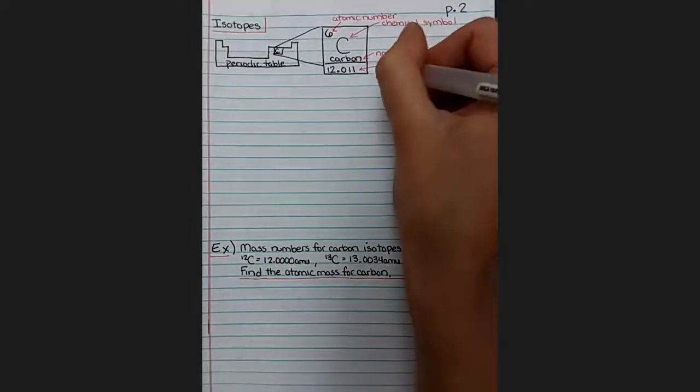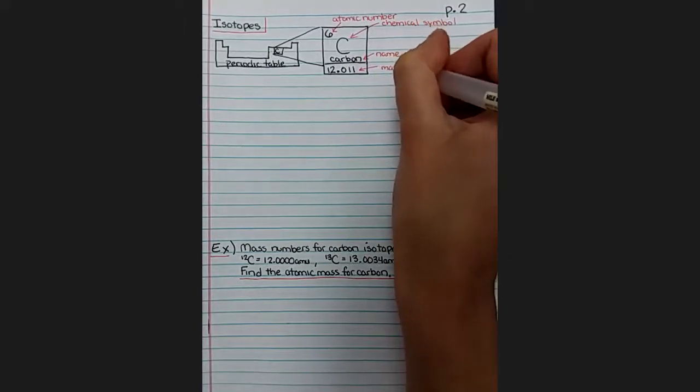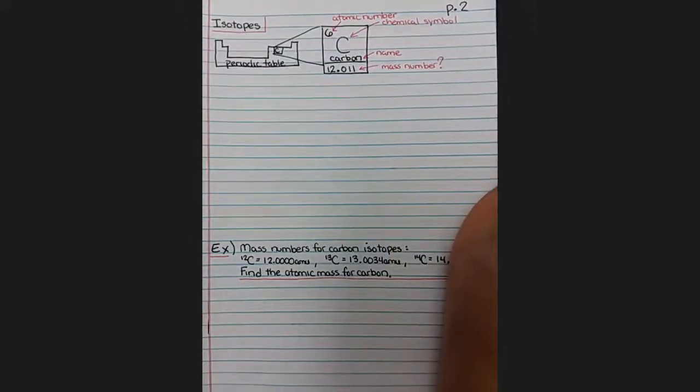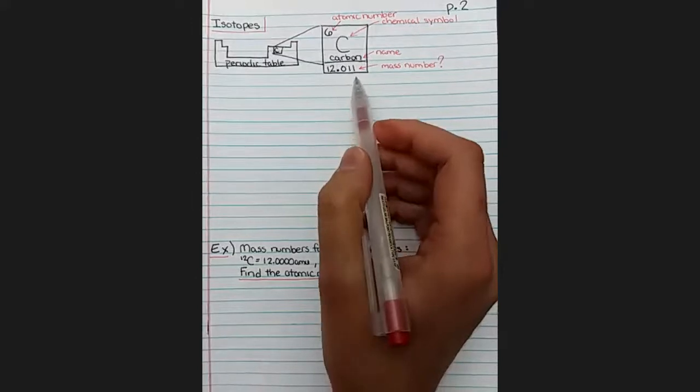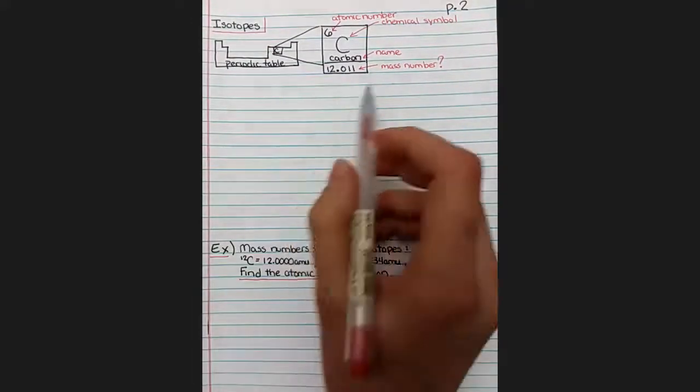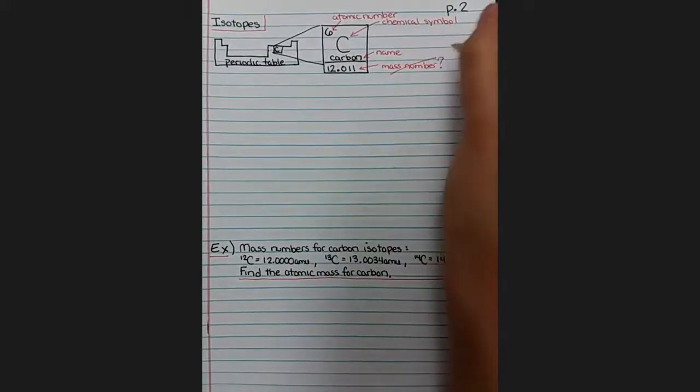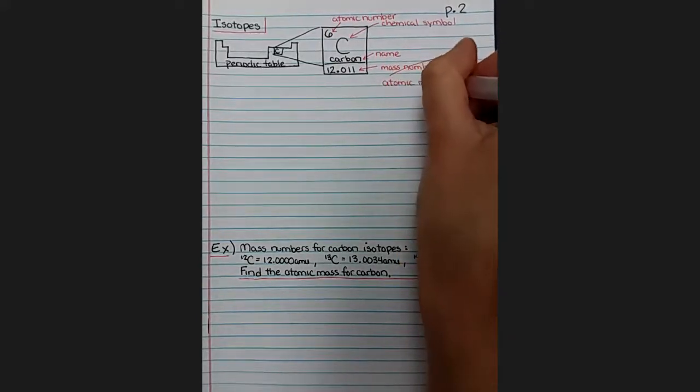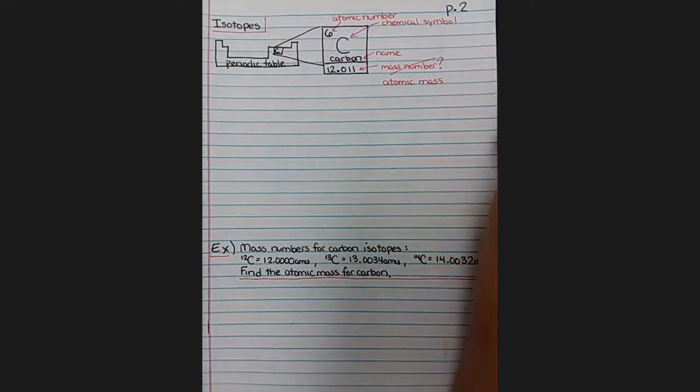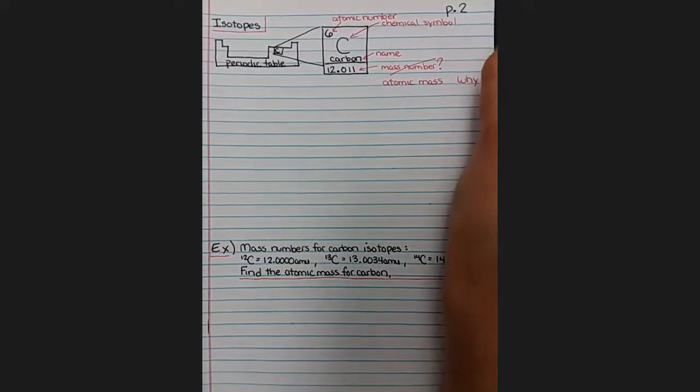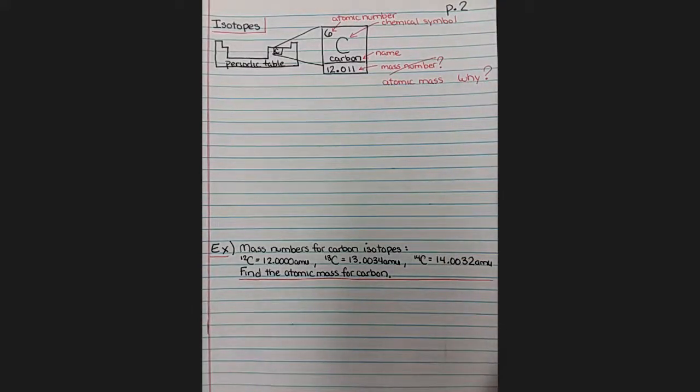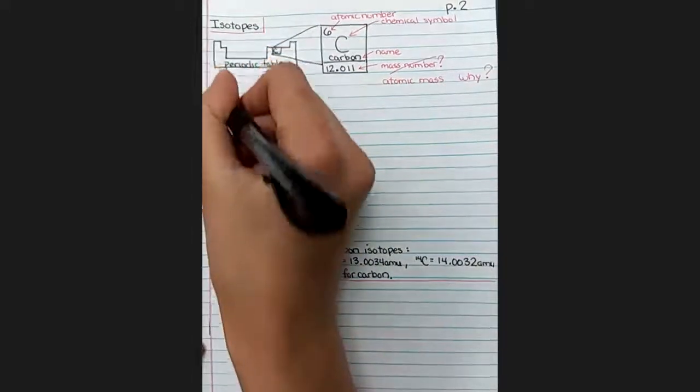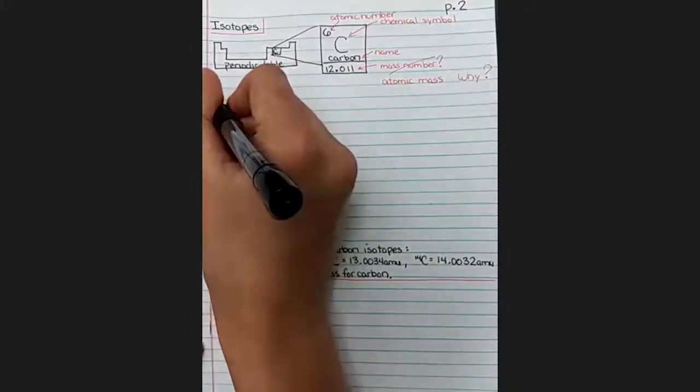We said that carbon's mass number was 12, so maybe this is the mass number. Maybe. Why is it 12.011 though, and not just 12? Why doesn't it look the same as the mass number that we had before? The answer is that this is not exactly the mass number. This is something different called the atomic mass, which is close to the mass number, but not exactly the same. So the question everyone wants to know, why are these not the same thing? And the answer is because of isotopes. Let's dive into what an isotope is, and then we'll come back to this weird atomic mass that's in the periodic table.